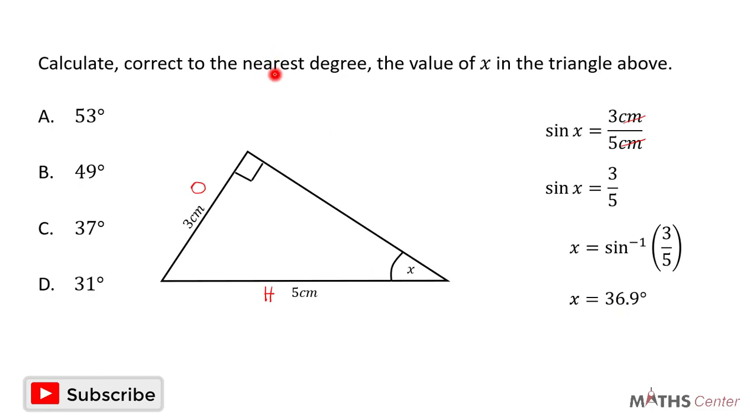But remember the question said we should correct our answer to the nearest degree. So we have to correct 36.9 degrees to the nearest degree. And when we correct 36.9 degrees to the nearest degree, we are going to have 37 degrees. So it means that the value of x in this triangle is 37 degrees. When we look through the options we have, we can see that the correct option is C, 37 degrees.